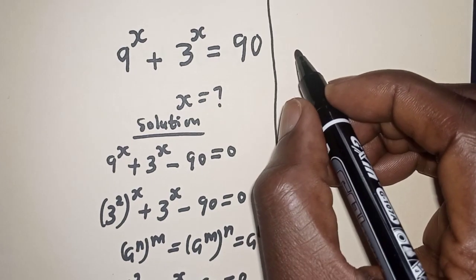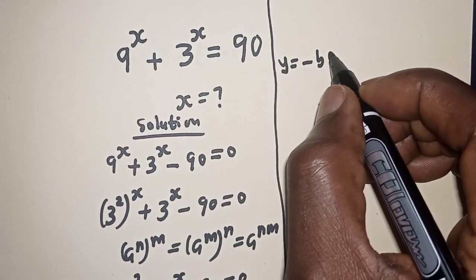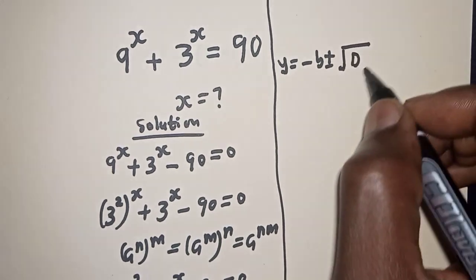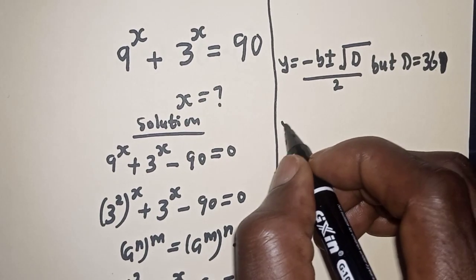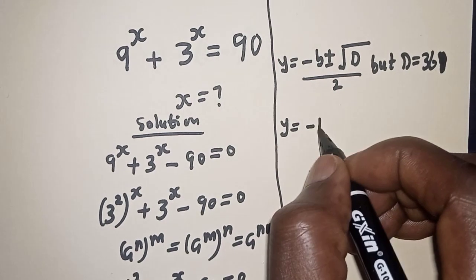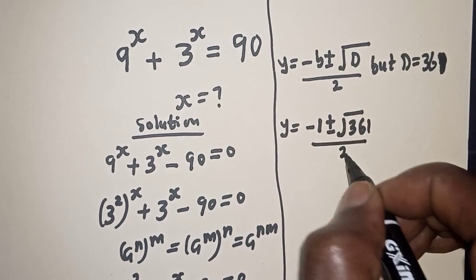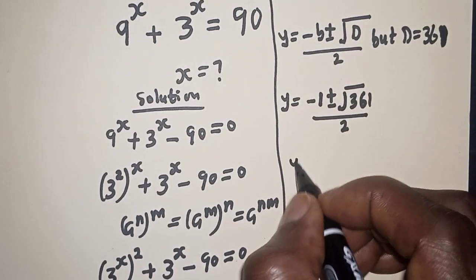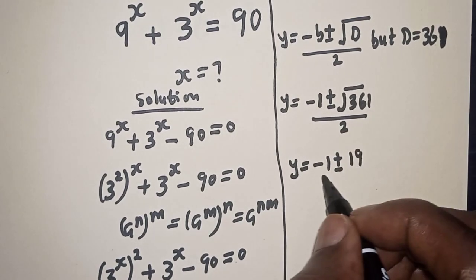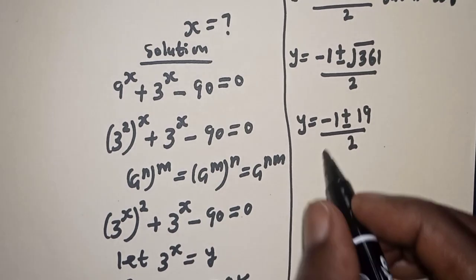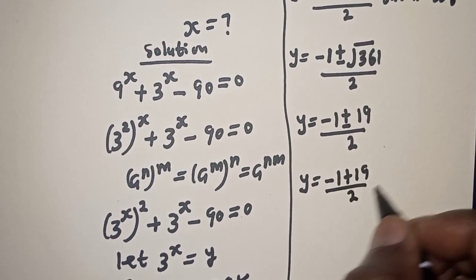Then we have y is equal to minus b plus or minus square root of 361, over 2. So y is equal to minus 1 plus or minus 19 over 2.